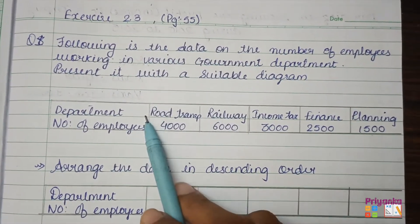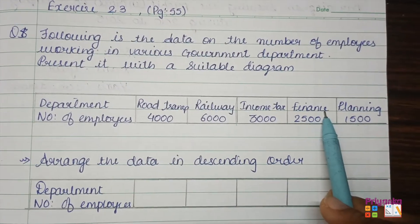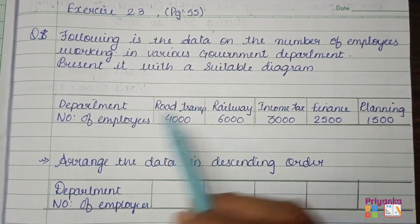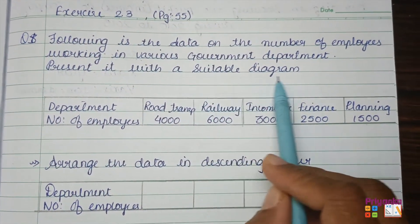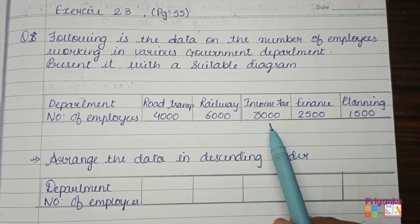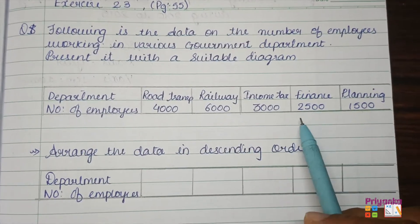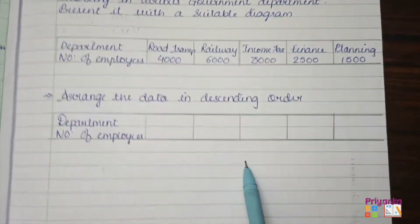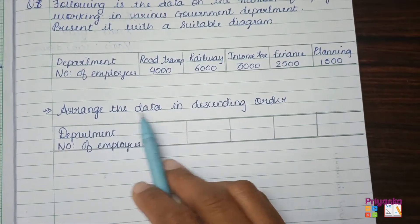The information given in the question is: department names — Road Transport, Railway, Income Tax, Finance, Planning — and their number of employees. They say to draw a suitable diagram from this information. Obviously it is best to draw a bar diagram, which you must have already learned in your secondary section. Before starting, you have to arrange the data in descending order.